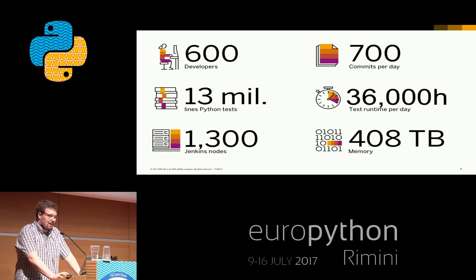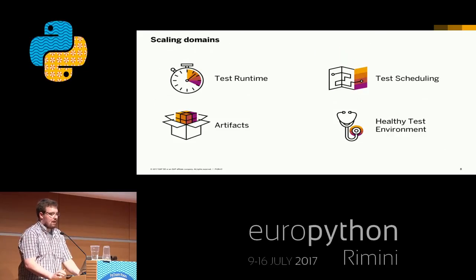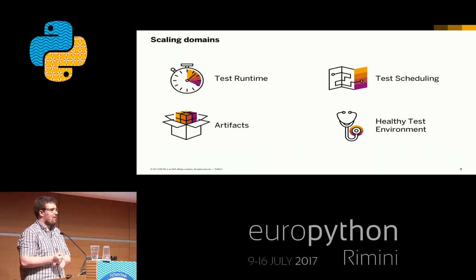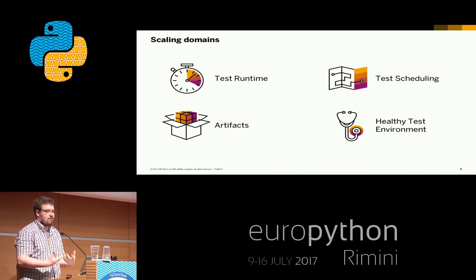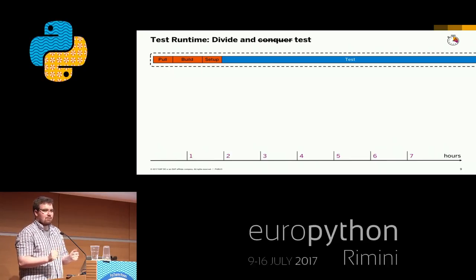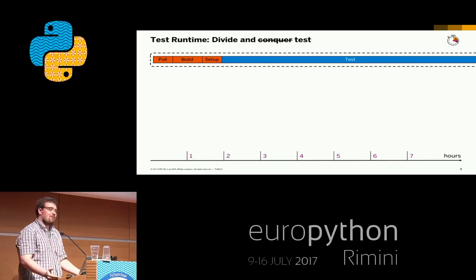Let's talk about how we did the scaling. One interesting part is test runtime — how we optimize that. This slide shows the runtime of a Jenkins job of around eight hours. You can see the job doesn't fit on the slide anymore. You're pushing and waiting more than eight hours until your test result is available. It's not so great from a developer perspective. We started to optimize it by applying the common pattern of divide and conquer — in our area it's basically divide and test.